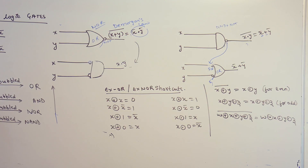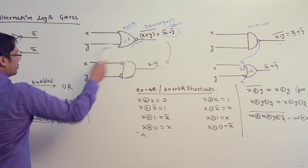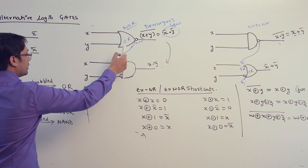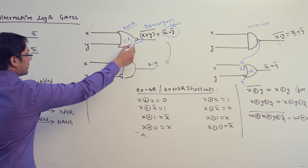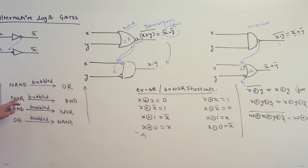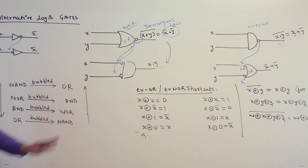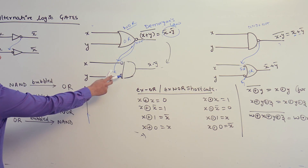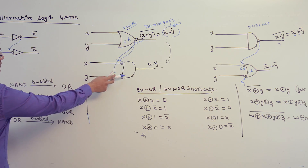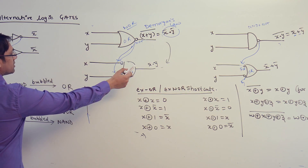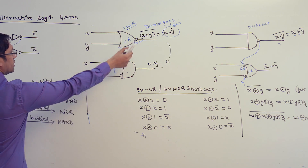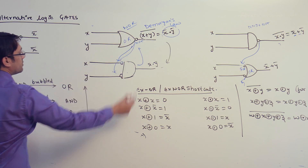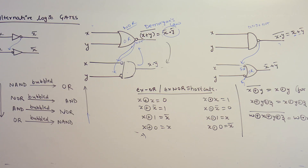In the same way, if we have an OR gate and shift these bubbles, then this bubbled AND gate is equivalent to the NOR gate. Similarly, if you have an AND gate and shift these bubbles, it becomes an OR gate.